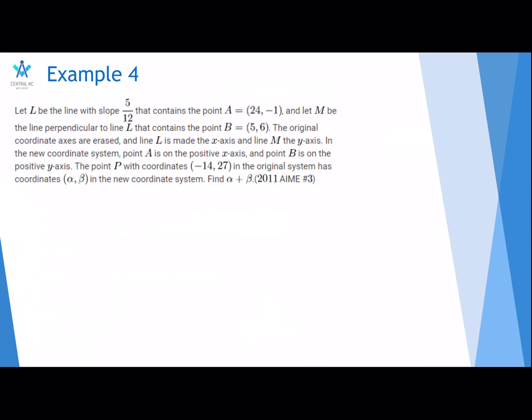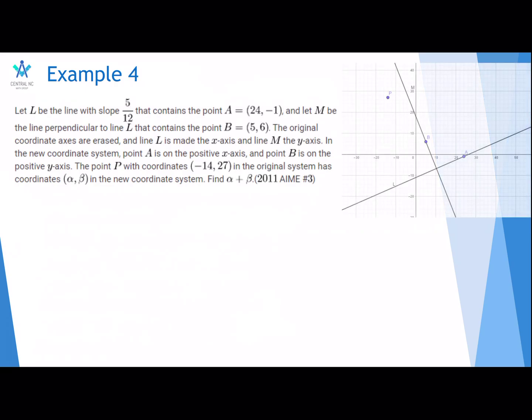This is the fourth problem. Let L be the line with slope 5/12 that contains the point A (24, -1). Let M be the line perpendicular to line L that contains the point B (5, 6). The original coordinate axes are erased and line L is made the X-axis and line M the Y-axis. In the new coordinate system, A is on the positive X-axis and B is on the positive Y-axis. The point P with coordinates (-14, 27) in the original system has coordinates (alpha, beta) in the new coordinate system. Find alpha plus beta.